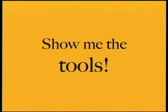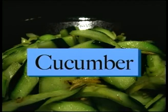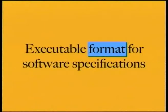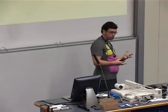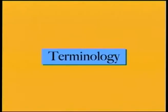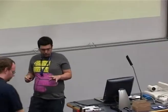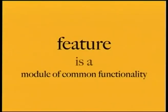What are the tools for doing this? The obvious one is Cucumber. Cucumber is an executable format for writing software specifications. It's also a tool for executing those specifications using the same high-level spoken language we were talking about. The tool takes that and interprets it and executes code behind the scenes.